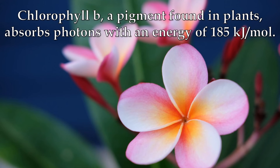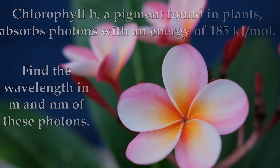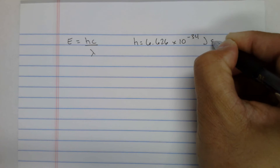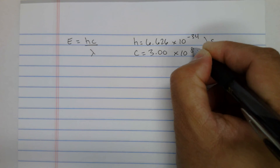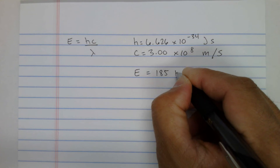Chlorophyll, a pigment found in plants, absorbs photons with an energy of 185 kilojoules per mole. Find the wavelength in meters and nanometers of these photons. We're given the energy and want to find the wavelength, so we start with E equals hc over lambda.